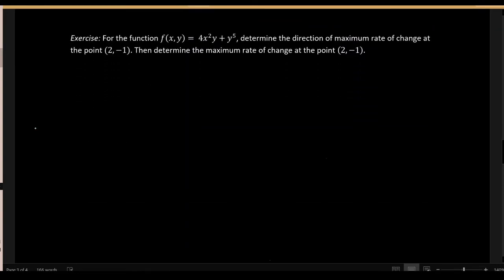Let's practice using the definition of the gradient and the theorem to answer the following question. We have the function f(x, y) = 4x²y + y⁵. We want to determine, first, the direction of maximum rate of change at the point (2, -1), and second, the actual value of the maximum rate of change — how to attain the maximum rate and what that maximum rate is.